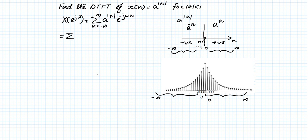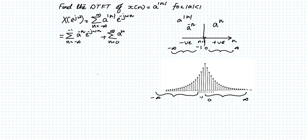Splitting the summation, we get: Σ from n=−∞ to −1 of a^(−n)·e^(−jωn), plus Σ from n=0 to ∞ of a^n·e^(−jωn). We now have two summations that we need to simplify.